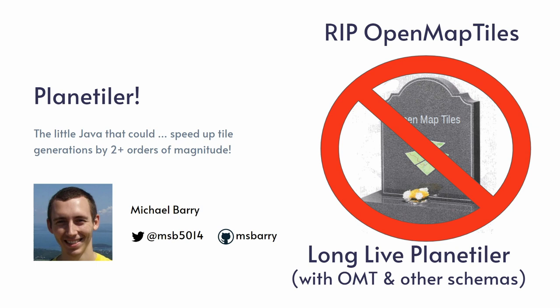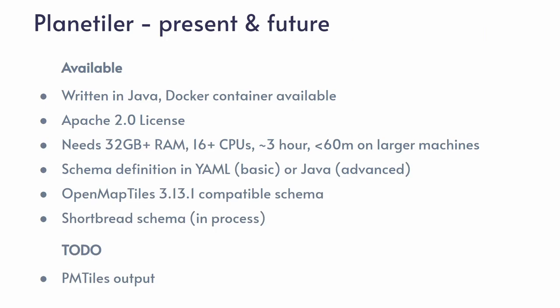Basically you generate the whole planet on a beefy machine in under one hour, single machine. On a laptop it's three to four hours if it's beefy. That's two orders of magnitude faster. Written in Java — I was surprised myself. Apache 2.0 licensed. Schema is now defined in YAML, plus some complex stuff is defined in Java — like complex operations such as building mergers. If you have lots of small buildings, it's hard to define that as a YAML thing, but you can define the algorithm for merging small polygons into a bigger one. There are already two implementations: it supports Shortbread and OpenMapTiles. PMTiles support is coming, so there's a lot of active work on that.